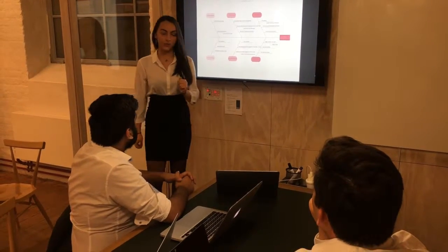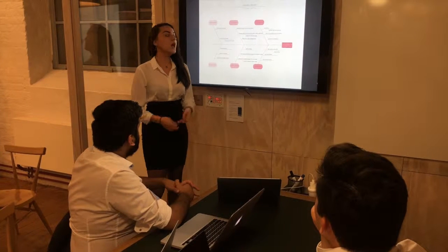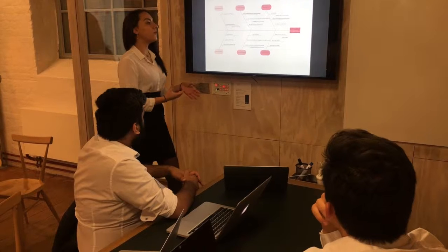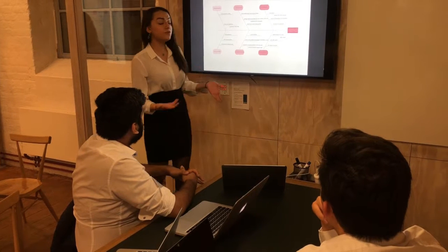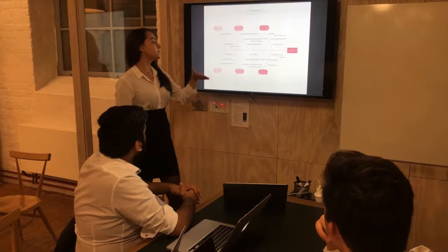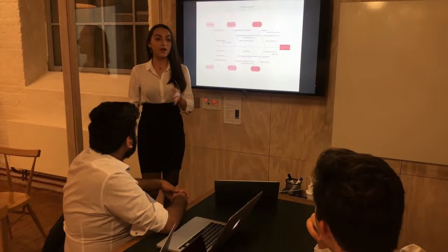We also have the social structure problem, which means that young skilled labor is currently leaving the country to seek opportunities abroad. This is because there is general dissatisfaction with the system — working contracts do not guarantee any type of security, there is the low salary problem where young people have really low salaries compared to the older generation, and there are poor working conditions with poor communication and lack of encouragement and recognition, all making skilled labor go abroad.